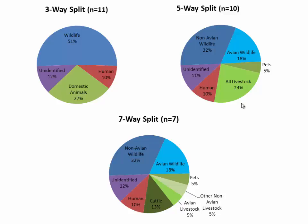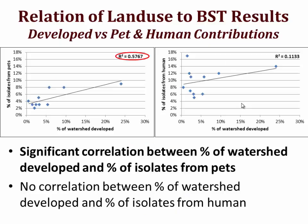A question I've commonly gotten after presenting this is whether we see any correlations with land use, or whether we'd expect to find similar results in urban areas. Taking a quick look, we really didn't see any good relationships between land use and the different source classes. About the best one I found is between the percent of the watershed that's developed and pets — as you'd expect, the more of the watershed that's developed, the more pets you would have, and the more loading you'd get from them.